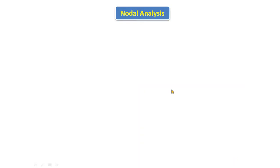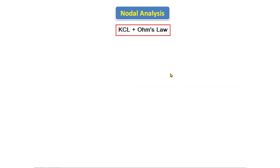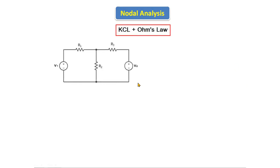Today we are going to discuss nodal analysis. Nodal analysis is used to find out the node voltages and the current passing through each and every resistor. We can also find out the voltage across each and every resistor using this method. In nodal analysis we use KCL as well as Ohm's Law to find the unknown voltages.